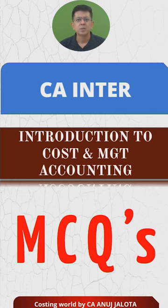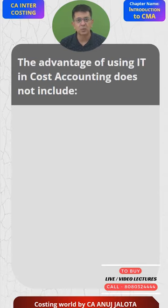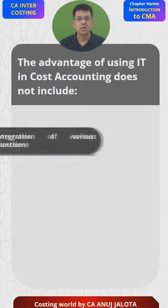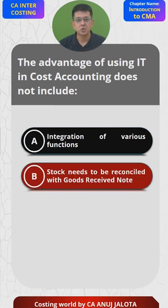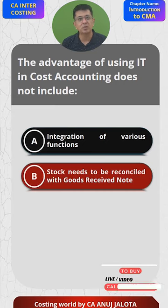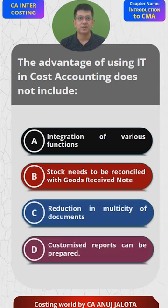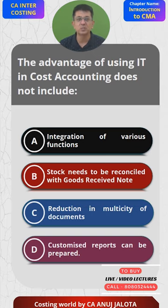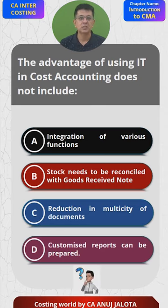Today's question: 'The advantage of using IT in cost accounting does not include...' Option A: Integration of various functions. Option B: Stock needs to be reconciled with goods received note. Option C: Reduction in multiplicity of documents. Option D: Customized reports can be prepared. Which of these is NOT an advantage? Try to think and comment in the section below.